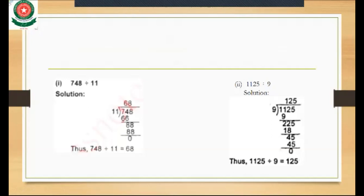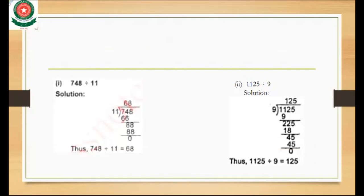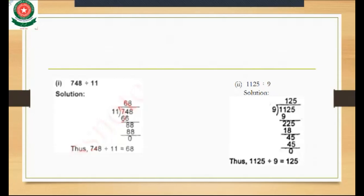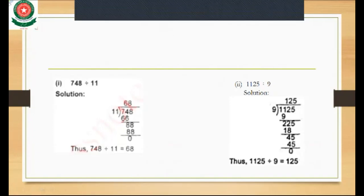First question, Exercise 2.4, question number 2, first part: 748 divided by 11. We will do the same procedure as in the previous lecture. We place 748 inside the division form and 11 outside, then we take two digits — we take 74.